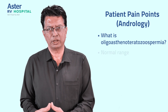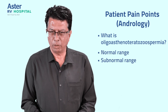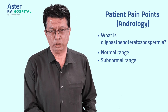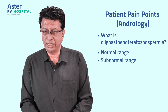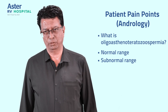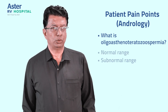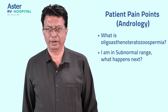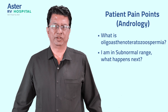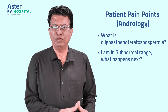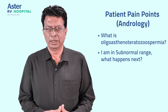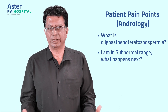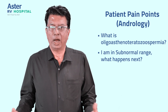Once you have this assessment, it gives you a signal whether you are in the normal range or the subnormal range. If you are in the subnormal range, how subnormal are you — terribly subnormal, moderately subnormal, or mildly subnormal? Now, if I have a report that says I am in the subnormal range, what happens next? The question is: where is semen produced? It is produced inside your testis.